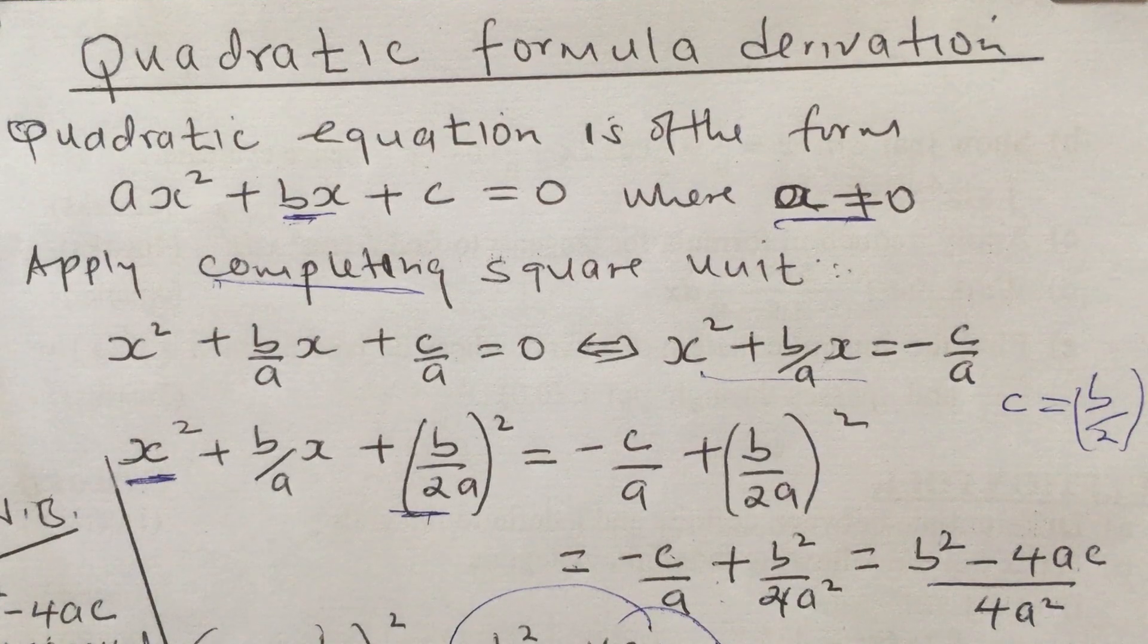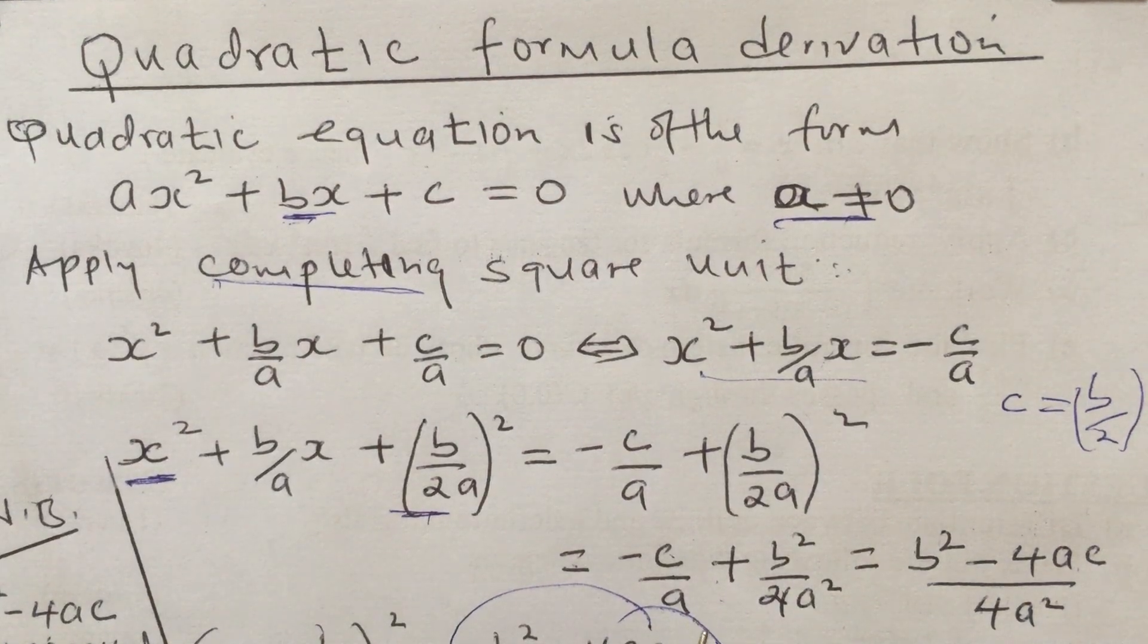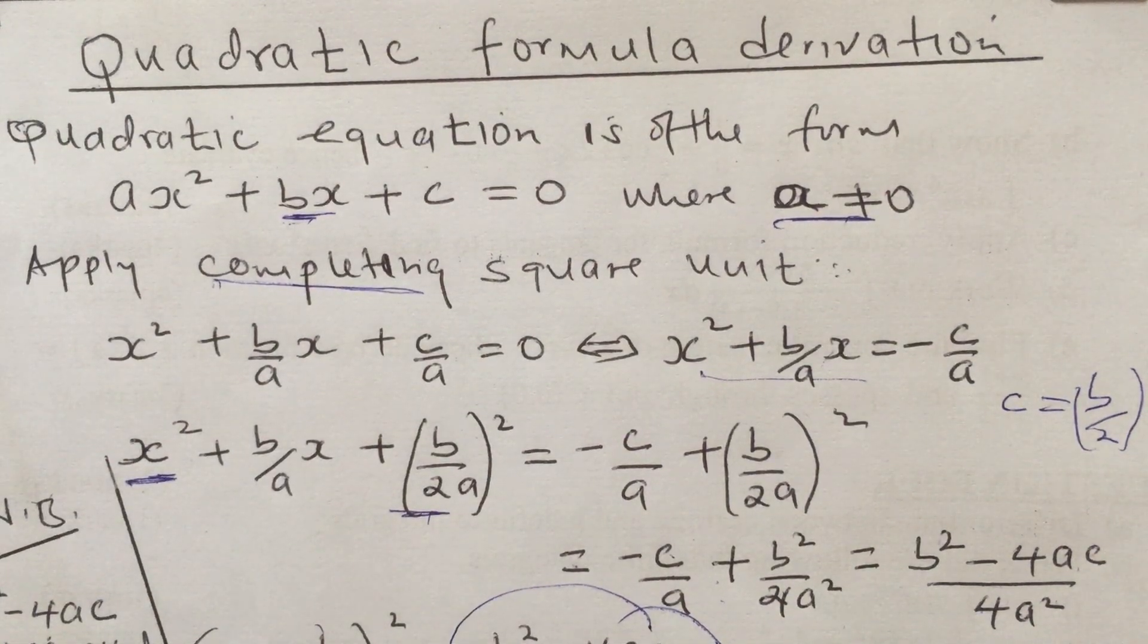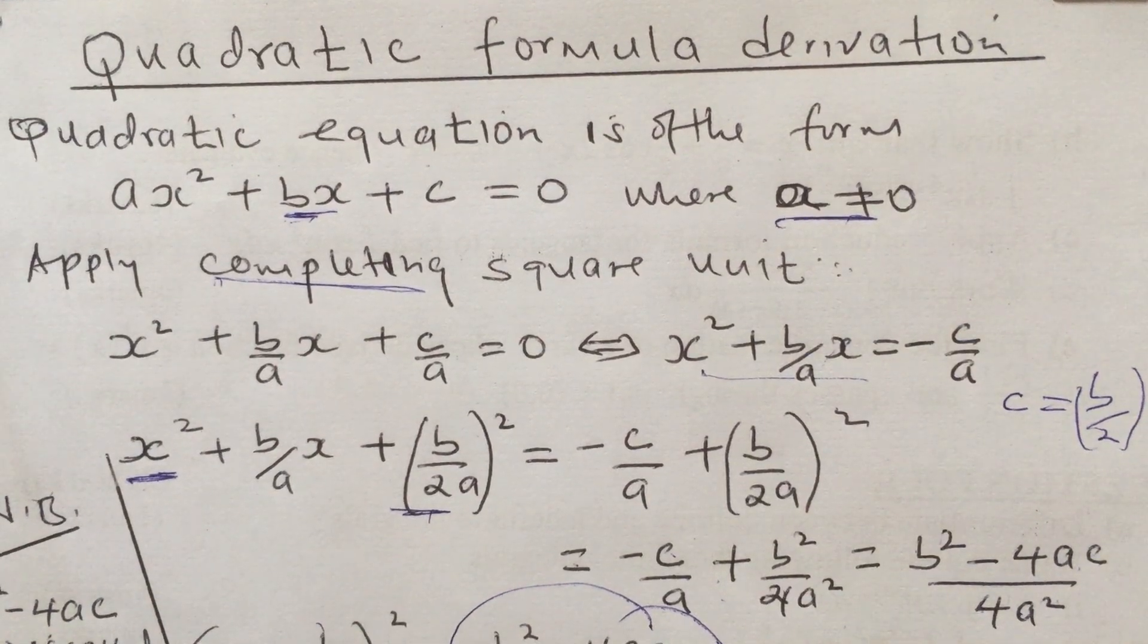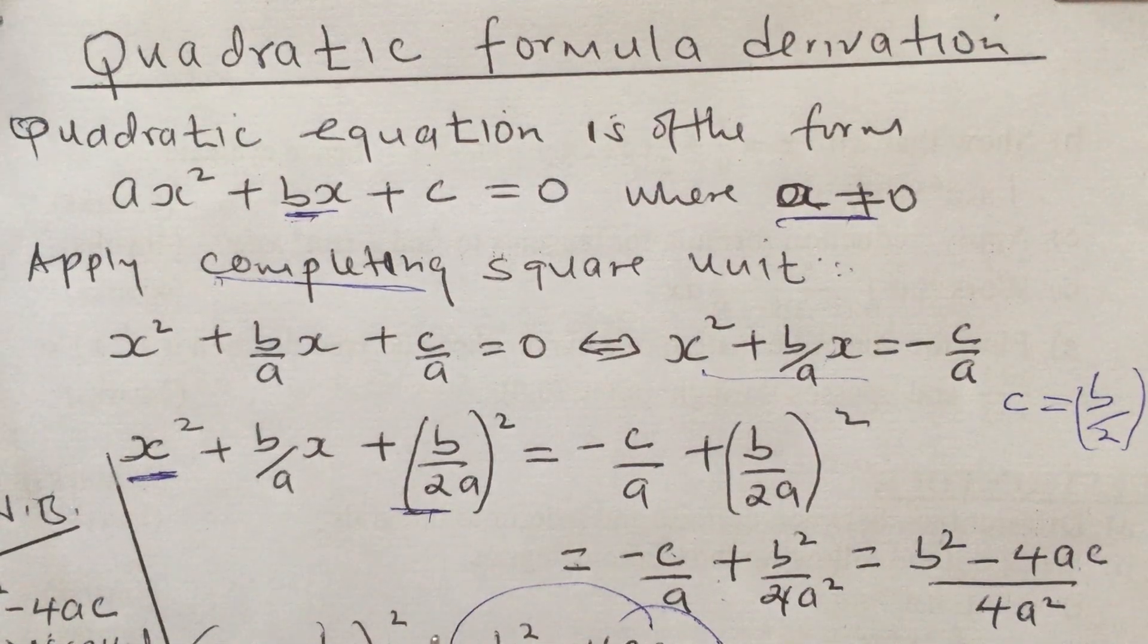Welcome. Today's lesson is the quadratic formula, and I'll be looking at the derivation part of it. Have you ever wondered where this quadratic formula comes from? The simple answer is that the completing square approach can actually result in the quadratic formula. In other words, the quadratic formula is just a special case of the completing square method.